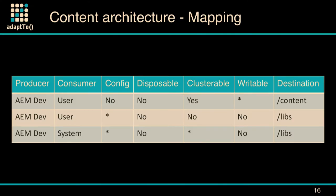Based on the content categories and content buckets we considered, we built a large table with all the category values and where content should be placed. This is just a short example — there's a full mapping in the appendix if you download the presentation. As a short example: if the producer is the AEM developer and the consumer is the user, for non-configuration, non-disposable, cluster-visible content, that should go to /content. If the producer is the AEM developer consumed by the user, for non-disposable, non-cluster-visible, and non-writable content, that should be libs.